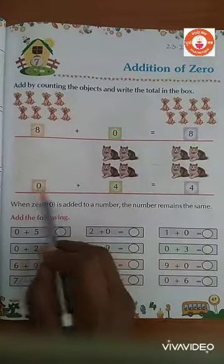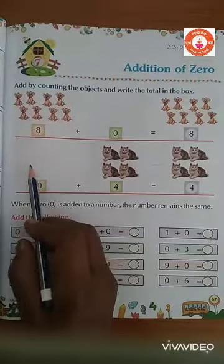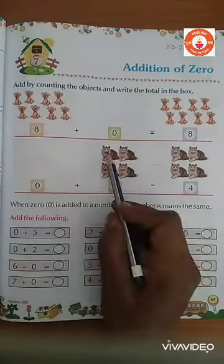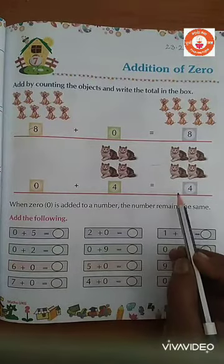One more. 0 plus 4. See, nothing is there. 0 means nothing. One, two, three, four. 0 plus 4, 4.